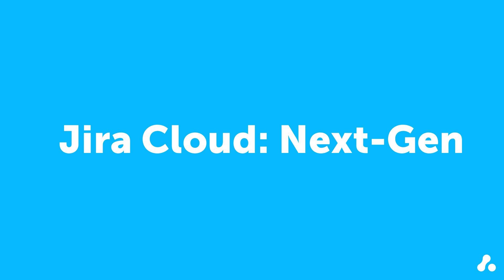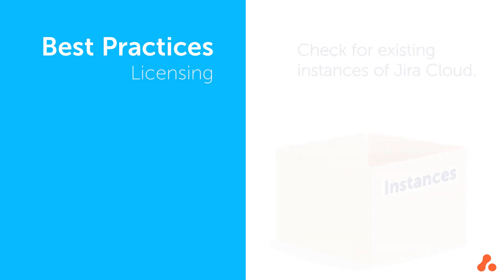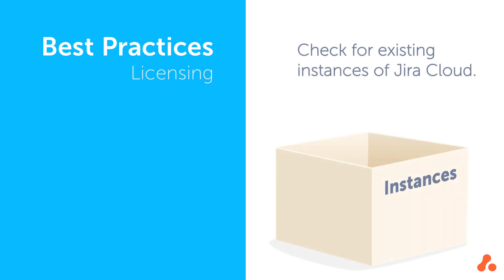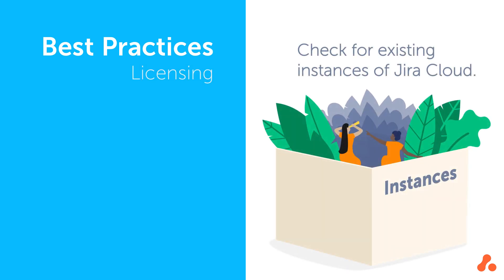Before we dive into Jira, here are a couple of tips that could save your organization a lot of time later on. Before purchasing Jira Cloud, check that your organization hasn't already purchased a license. Jira works best when everyone in a business has access to the same instance, so that you can coordinate projects, add links to issues, and easily communicate between departments about your work. Using permissions, you can give access to the right people in the right projects in one company-wide instance.